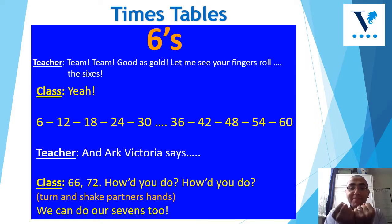Team, team, good as gold, let me see your fingers roll the sixes. Yeah! 0, 6, 12, 18, 24, 30, 36, 42, 48, 54, 60. And Arc Victoria says 66, 72.